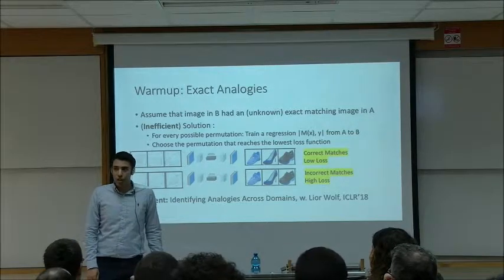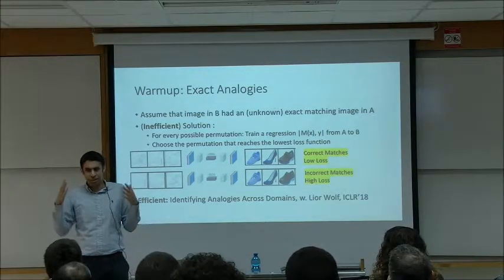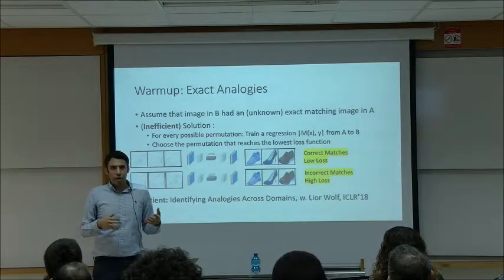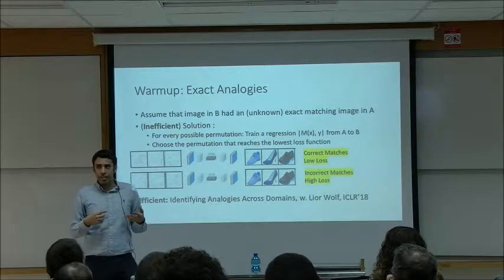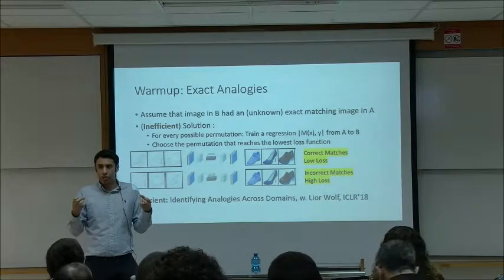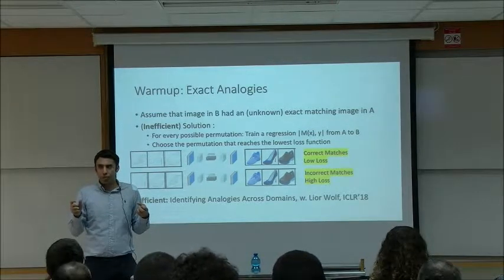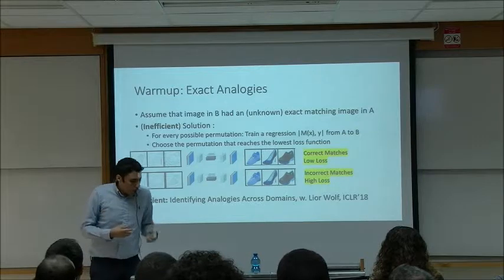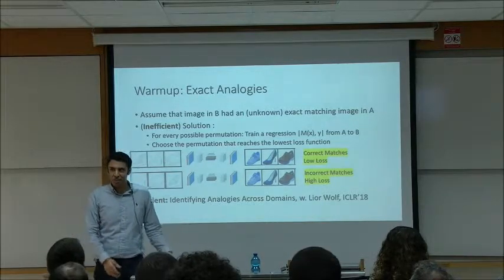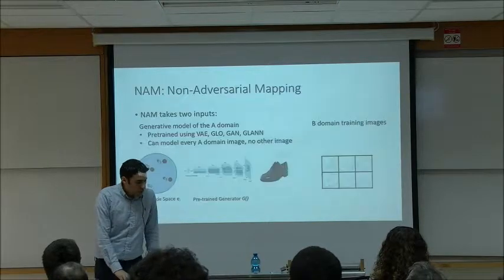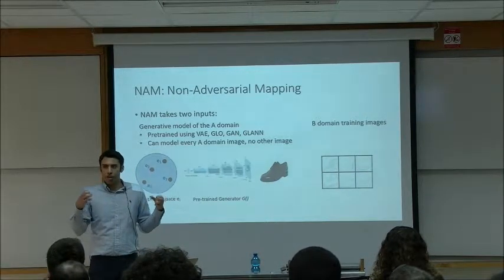In joint work with Leo Wolf presented at iCLR, we presented a solution for this that is efficient and not NP-hard. In the current work, however, we do not assume exact matches between the training sets of domains A and B — we might not have any correspondences at all. NAM takes two inputs: a generative model of the A domain (one that can generate every image in the A domain and no other, where GLAN would be a great choice) and a set of B domain training images.